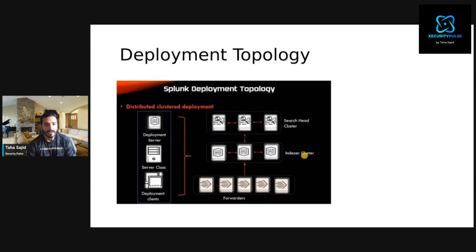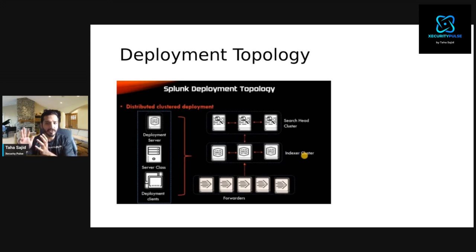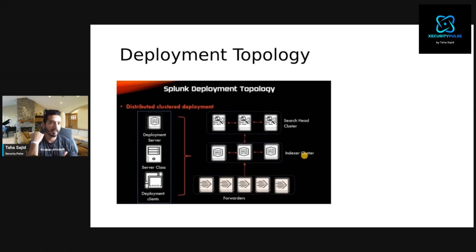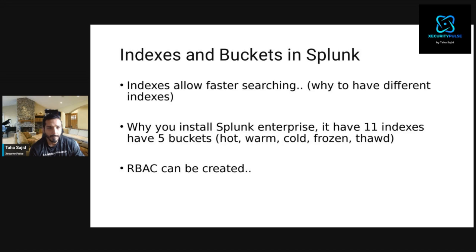Deployment topology can be a single deployment or a distributed cluster deployment. You need a deployment server, deployment clients, and server class. There is a search head cluster, index cluster, and forwarders running on clients. You can use an on-prem or cloud deployment model. Think of it like a control plane and data plane — the deployment server is the control plane where you run all configurations, while the actual instance handling traffic is the data plane.